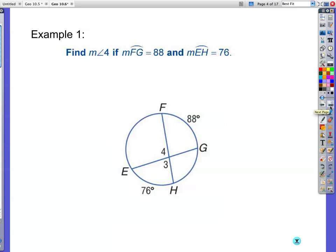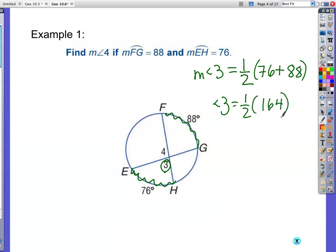All right, let's put it into practice. We want to find measure angle four and find arc EH. Let's start by actually just finding a measure of angle three. Something we could deal with pretty easily. So we're going to take the measure of angle three is going to equal one half of this arc. See how it's formed by these two secants? So it's one half of 76 plus this arc right here, 88. So angle three is equal to one half of 164, and one half of 164 is going to be 82.